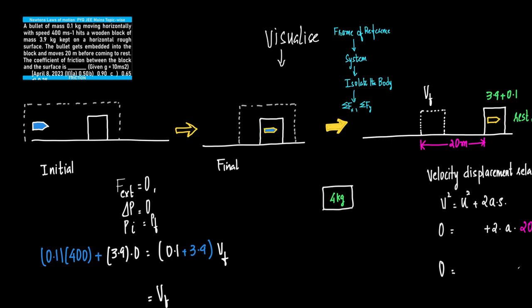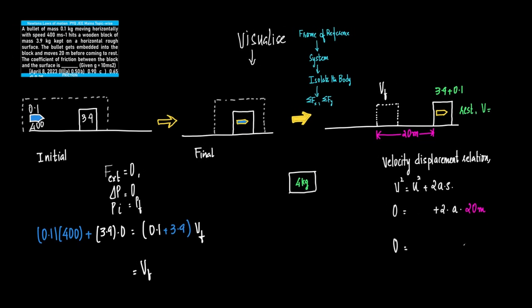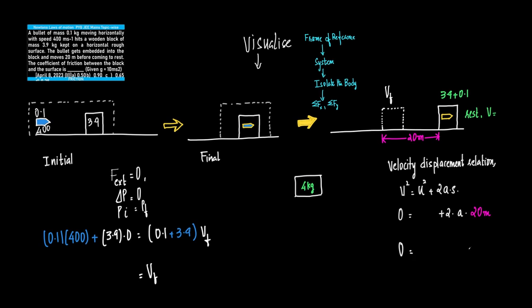A bullet of mass 0.1 kg moving horizontally with a speed of 400 m/s hits a wooden block of 3.9 kg kept on a horizontal rough surface. The bullet gets embedded and moves 20 cm before coming to rest. We need to find the coefficient of friction between the block and the surface.